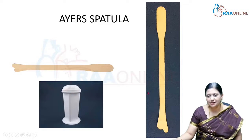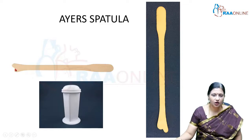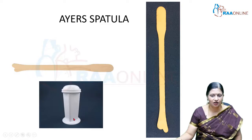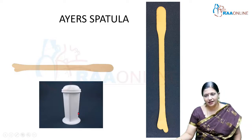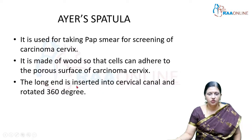The next instrument is the Ayre's spatula, shown alongside the Coplin jar. It is used to take sampling from the transformation zone. The long limb is inserted into the internal os and the short limb rests on the ectocervix; it is then rotated 360 degrees and smeared on a glass slide, which is then placed in the Coplin jar containing ethanol and sent to pathology for the Pap smear.